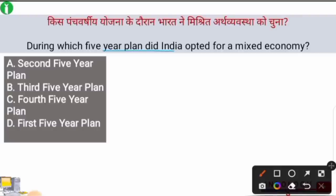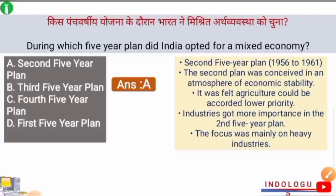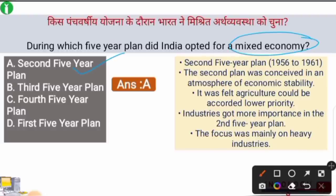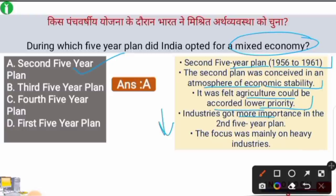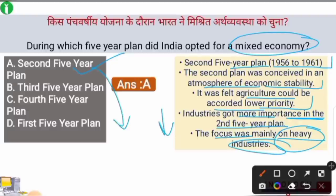Next question: During which Five Year Plan did India opt for a mixed economy? The right answer is the Second Five Year Plan. In a mixed economy, a country follows both socialism and capitalism. The Second Five Year Plan ran from 1956 to 1961 and was conceived in an atmosphere of economic stability, as the First Five Year Plan was quite successful. Agriculture was given lower priority, and industries — especially heavy industries — got more importance. It was created by P.C. Mahalanobis and is also called the Mahalanobis model.